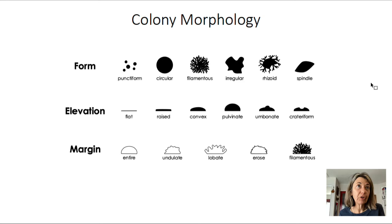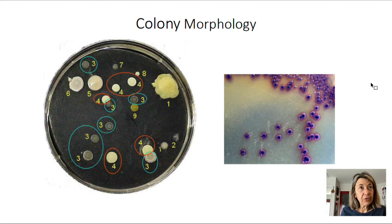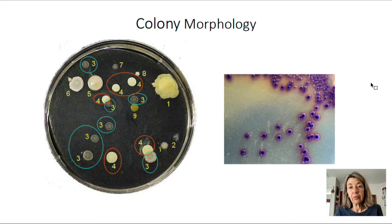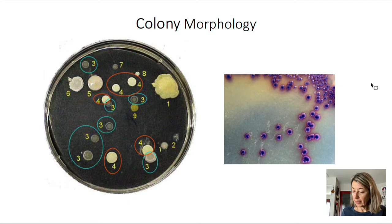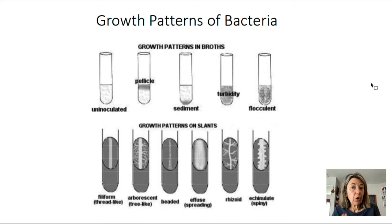Here are a few examples: to the left you can see circular colonies with an entire margin; to the right, a slightly irregular lobed one. You also want to describe the color of the colony — depending on the bacterium, some colonies produce pigments and can have very beautiful colors. It is recommended to watch the video for better visualization. In broth, the left sample is uninoculated.